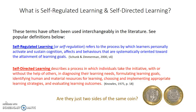In the literature, self-directed learning and self-regulated learning are often used interchangeably, which obviously confuses people that don't spend thousands of hours reading the literature. You can look at these two terms yourself, digest it, do a comparison and contrast what's similar and what's different. Are they just two sides of the same coin?